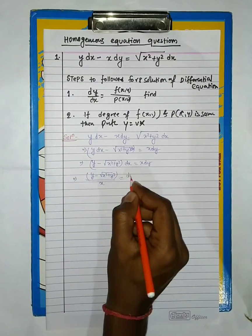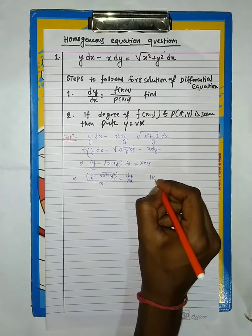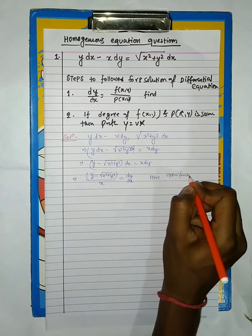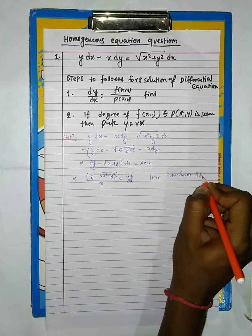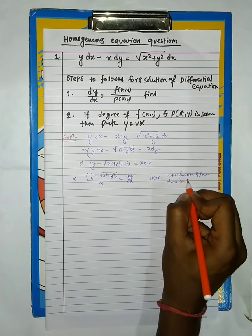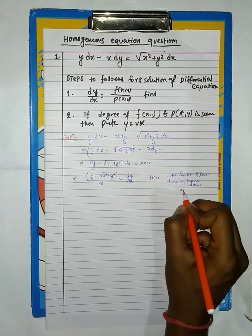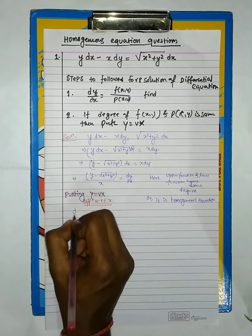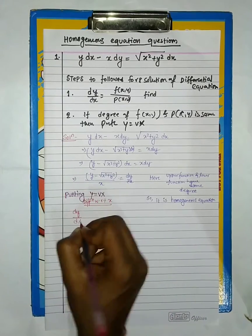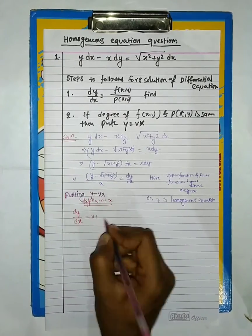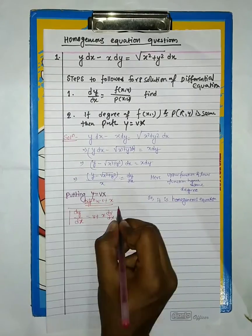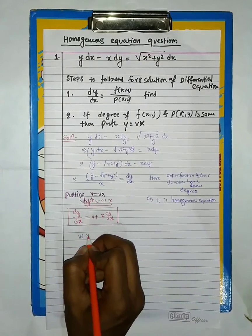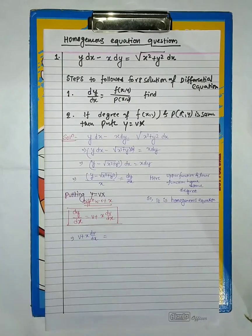The first problem is given: y dx minus xy dx dy equals the square root of (x squared minus y squared) dx. Firstly, we have to find dy/dx, which equals y minus the square root of (x squared plus y squared), all divided by x.